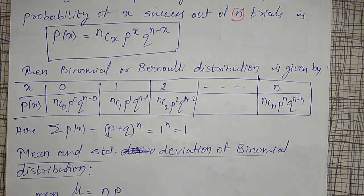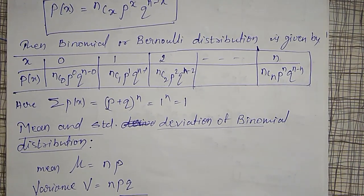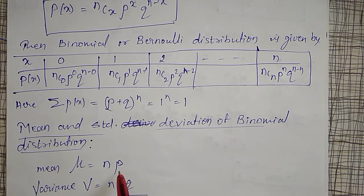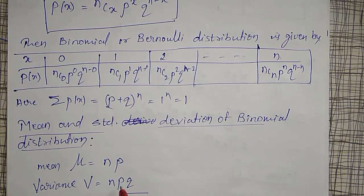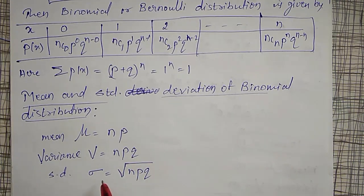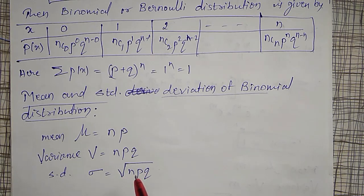The mean and standard deviation of a binomial distribution are: mean = n·p, where n is the number of trials and p is the probability of success. Variance = n·p·q, and standard deviation = √(npq).